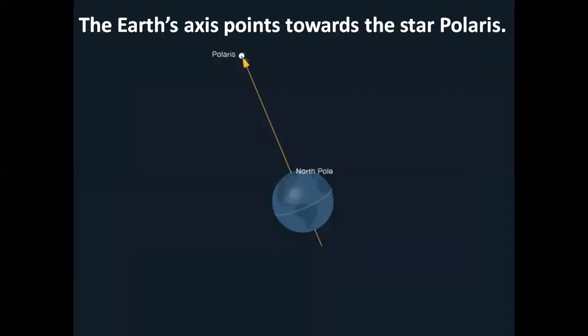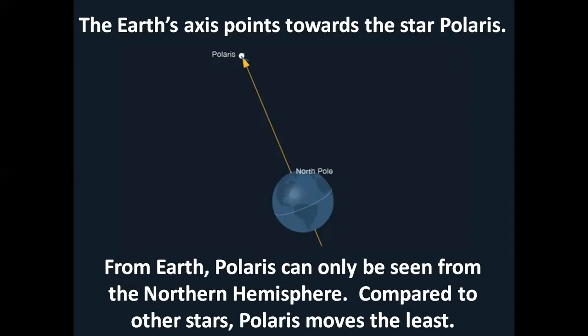The Earth's axis points towards the star Polaris. From the Earth, Polaris can only be seen from the Northern Hemisphere. Compared to other stars, Polaris moves the least.